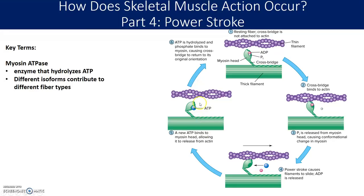Without ATP, your actin and myosin will be stuck together, and that's what happens in rigor mortis. When a person dies, they're not making ATP anymore, and so there's not enough ATP around to allow the actin and myosin to stop interacting, so they are stuck together — that's what makes them stiff.